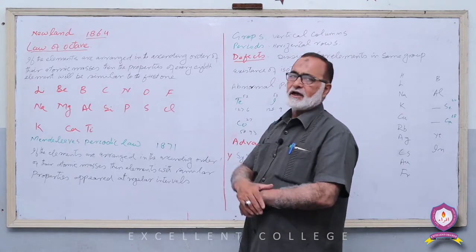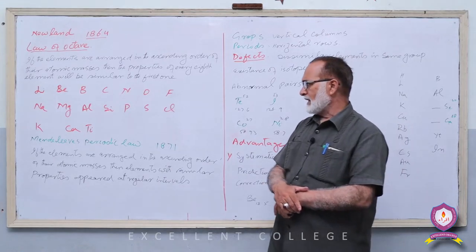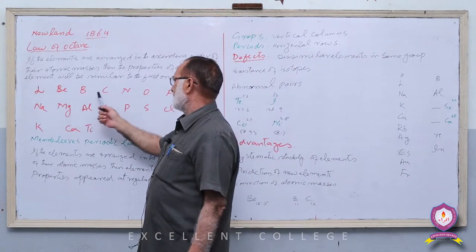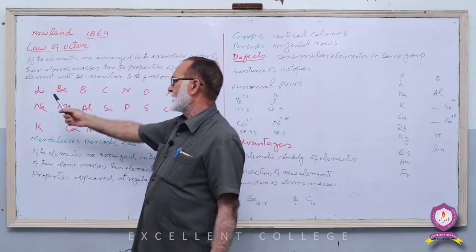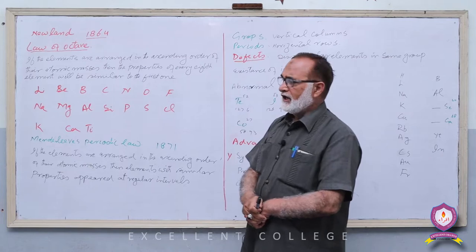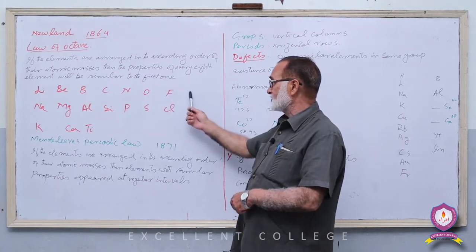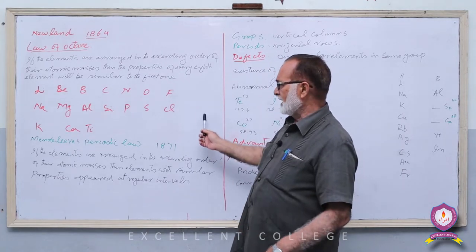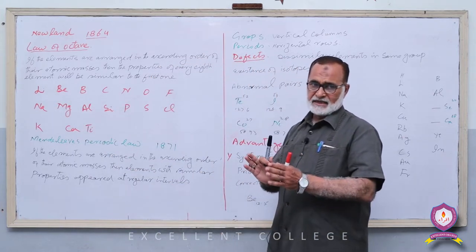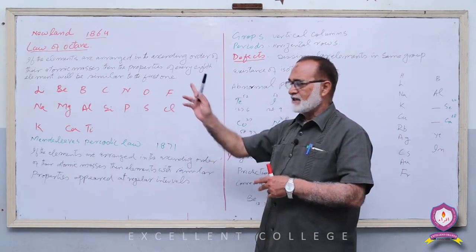Newlands نے Law of Octaves کی بنیاد پر elements classify کرنے کی کوشش کی۔ پہلے دو Octaves بالکل ٹھیک ہیں — پہلے Octave میں Lithium سے شروع کریں: Li, Be, B, C, N, O, F — ساتواں element Fluorine ہے، آٹھواں Sodium۔ Sodium کو Lithium کے نیچے رکھا because Sodium is the eighth element and shows similar properties to Lithium۔